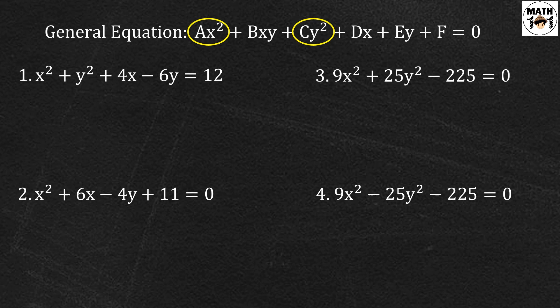Consider natin si question number 1. A is equal to 1 while c is equal to 1. They are of the same sign and equal sila. Therefore, this is a circle.